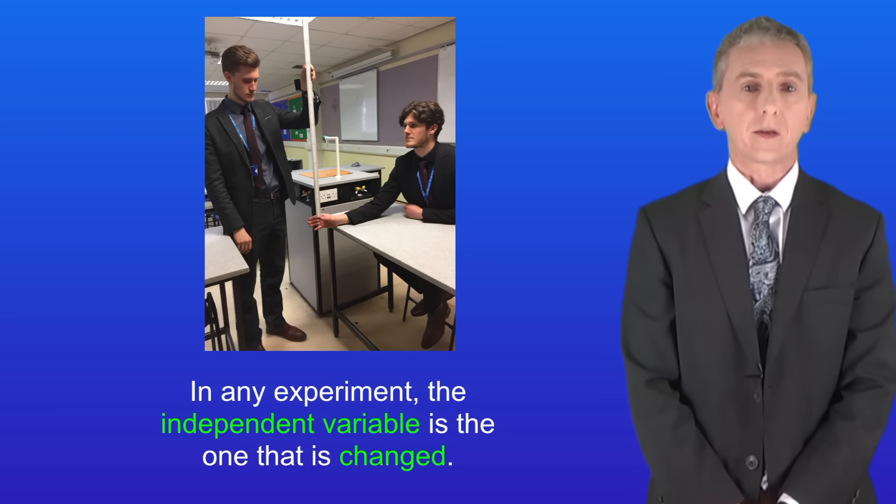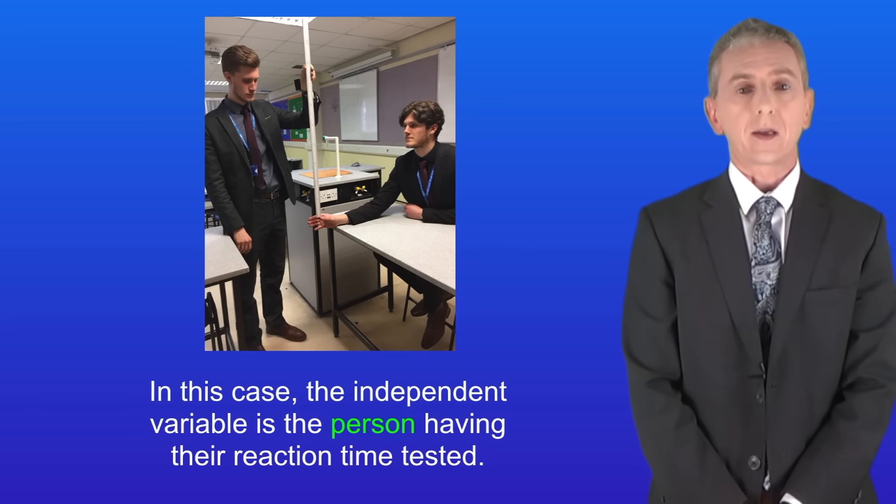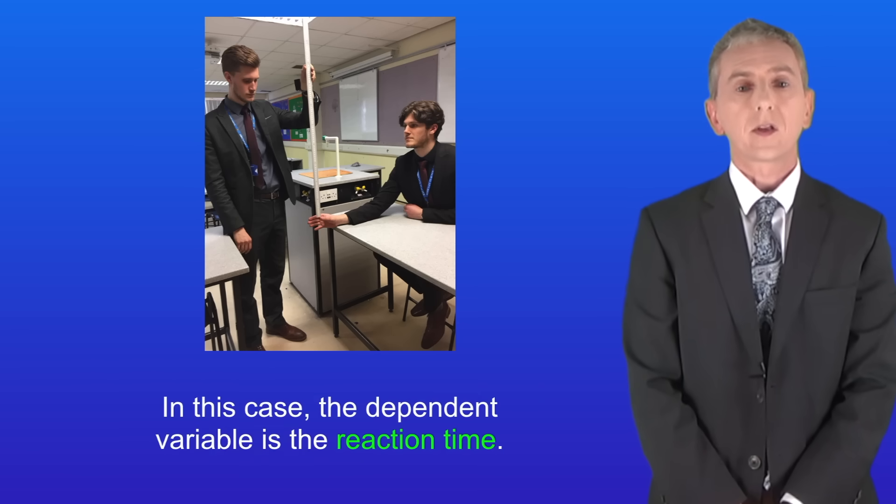Now in any experiment the independent variable is the one that's changed. So in this case the independent variable is the person having their reaction time tested. The dependent variable is the one that's measured for each change in the independent variable. So in this case the dependent variable is the reaction time.